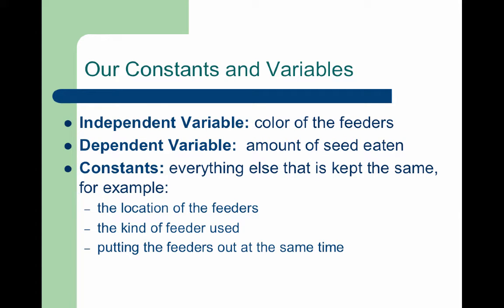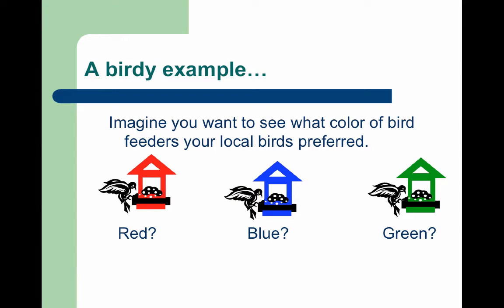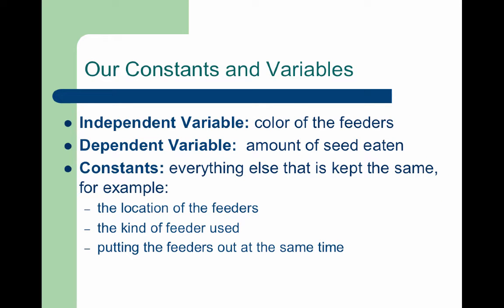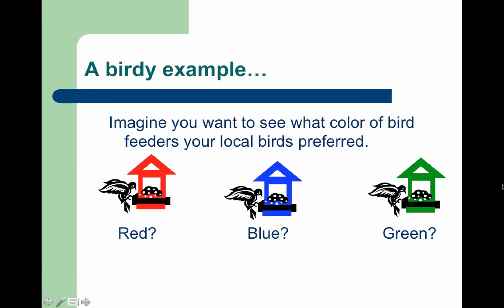We want to see how color affects our bird feeders. In this experiment, the independent variable is the color of the feeder — red, blue, or green — because we're deciding the color. The dependent variable is the amount of seed that's eaten, since it's responding to that change. Our constants are everything else: location of the feeder, the kind of feeder used, and putting all feeders in the same place — so we can determine if it really is the color affecting the change.